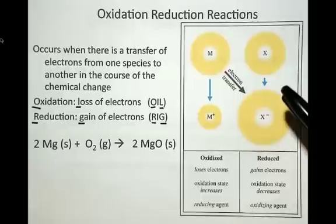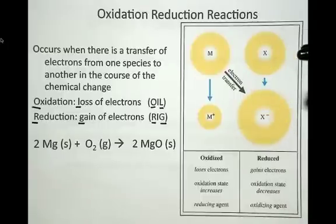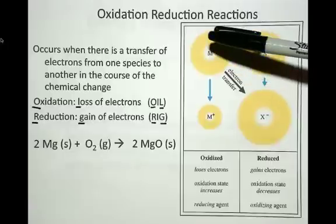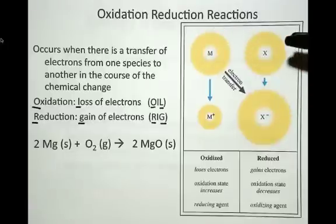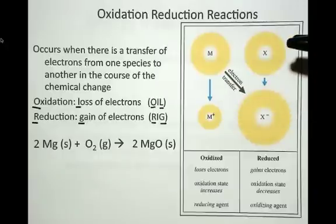But look over here. This is classically what happens in an oxidation-reduction reaction. In this case, the model is we're pretending this is a metal atom and this is a non-metal atom. Metals tend to lose electrons across a chemical change with a non-metal, which would tend to gain electrons.